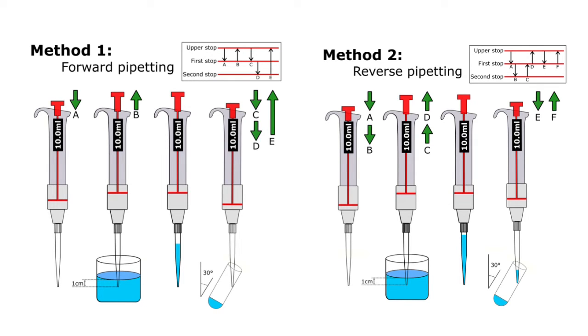Next step, in order to dispense the liquid, hold the tip at an angle of around 30-45 degrees against the wall of the receiving container, depress the plunge button to the first stop, C, and hold for one second.